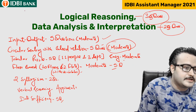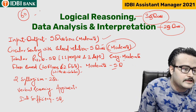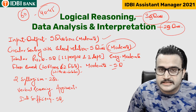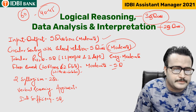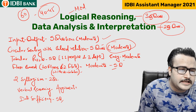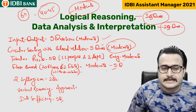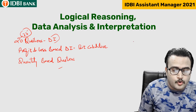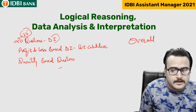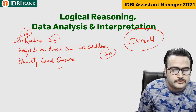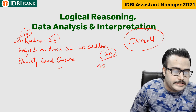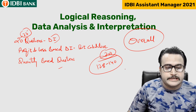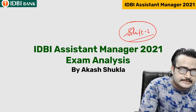In the Logical Reasoning and Data Interpretation section, out of 60 questions, 40 to 45 questions were doable — moderate level overall. For the overall attempt, out of 200 total questions, 128 to 140 is the best or excellent attempt, according to student analysis.